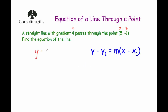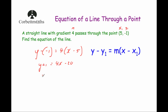Let's substitute those values into our equation. So y minus y1, where y1 is minus 1, gives us y minus minus 1 equals m, which is 4, brackets x minus x1, which is 5, so minus 5. Simplifying: y minus minus 1 becomes y plus 1 equals, expanding the brackets, 4 times x is 4x and 4 times minus 5 is minus 20. Getting it in the format y equals, we subtract 1 from both sides to get y equals 4x minus 21.